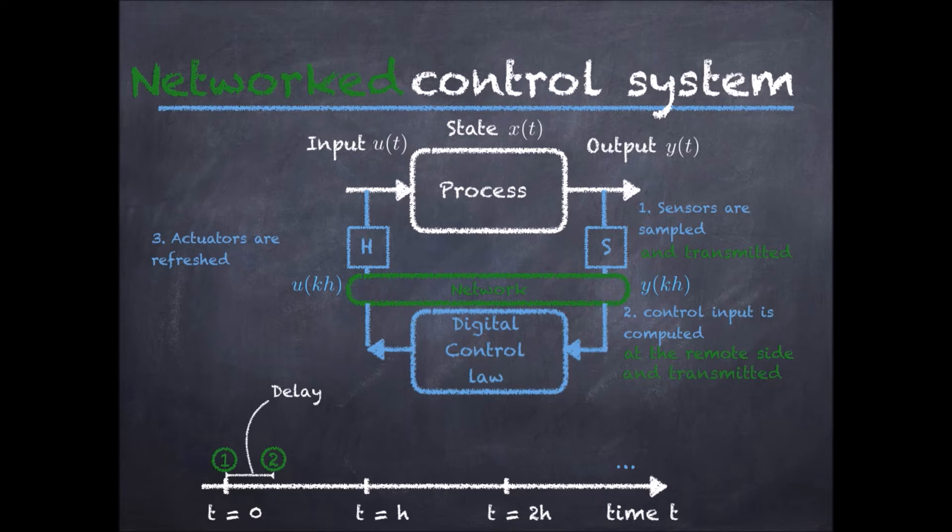Then, the control input is computed, and it has to be transmitted again to the process, and it is again received by the actuators after some delay. This procedure can be repeated immediately after the actuators are refreshed, or at time h.